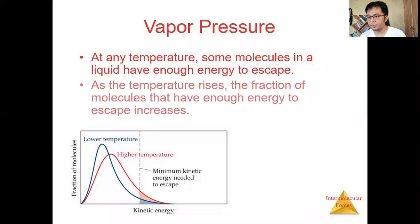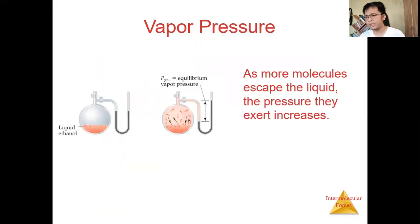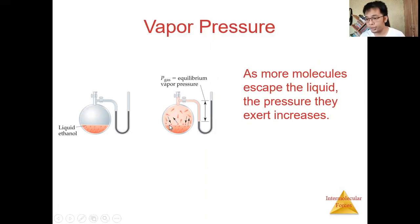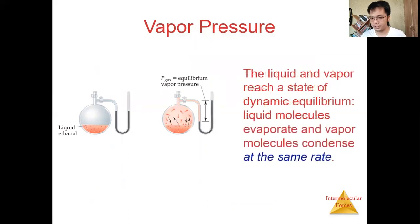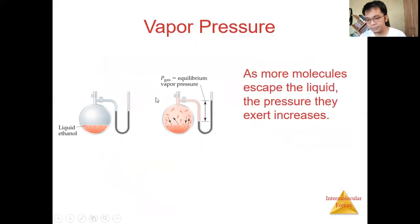So first, before we discuss the Clausius-Clapeyron equation, we need to discuss vapor pressure. What is vapor pressure? It is the pressure exerted by the gas from the liquid by which condensation and vaporization occurs in a closed container. As you can see here, the pressure of the gas is equal to the equilibrium vapor pressure because the more molecules leave the liquid, the more pressure they exert.